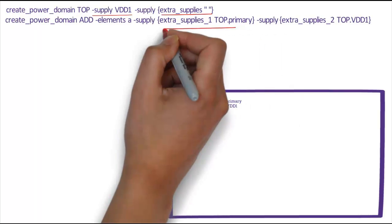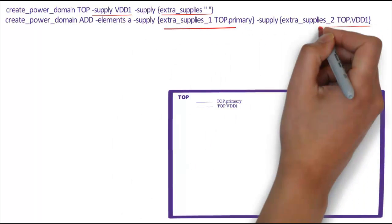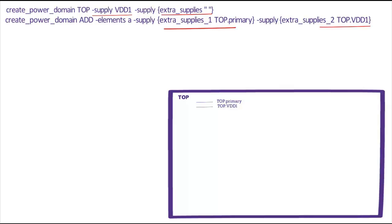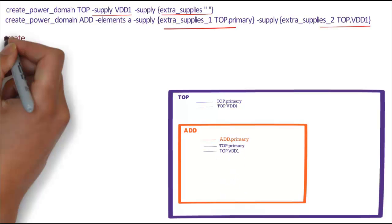Then we create Power Domain Add with Extra Supply's Top.Primary and Top.VDD1. This will create Power Domain Add with Add.Primary, Top.Primary and Top.VDD1.